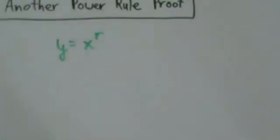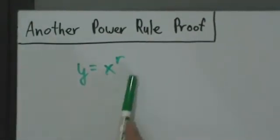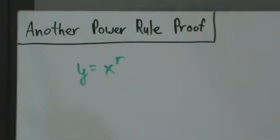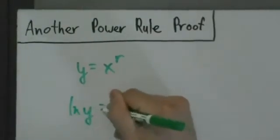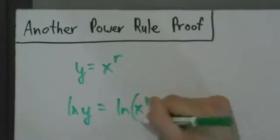But it is something that you need to do for functions of x raised to other functions of x, but it's also useful for this general proof here. So let's go ahead and do that. First step is take the natural log of both sides: natural log of y equals natural log of x to the r.